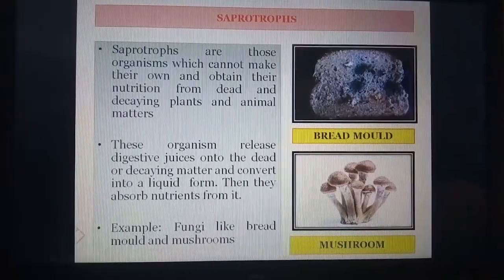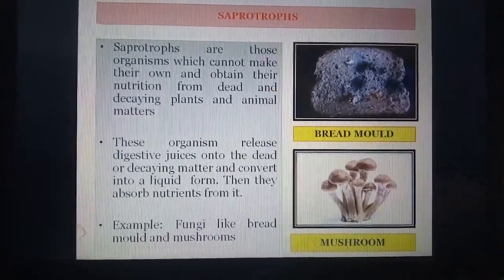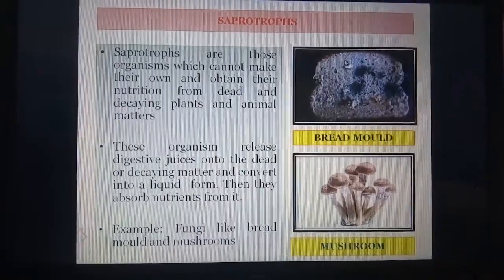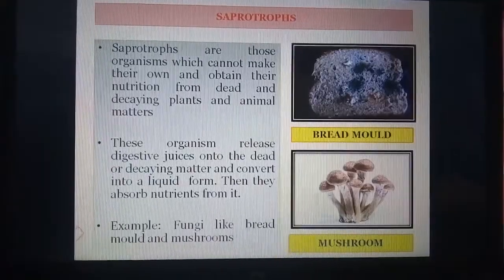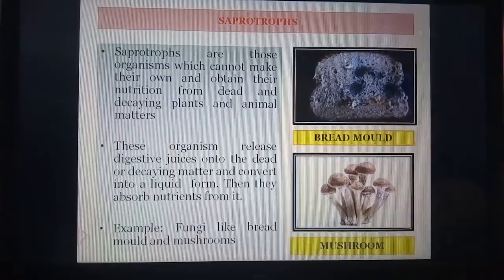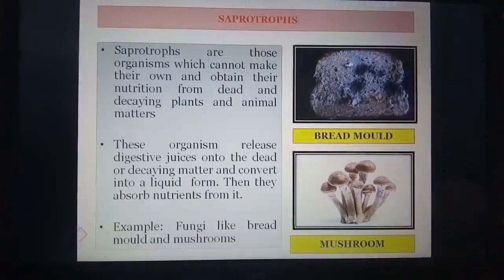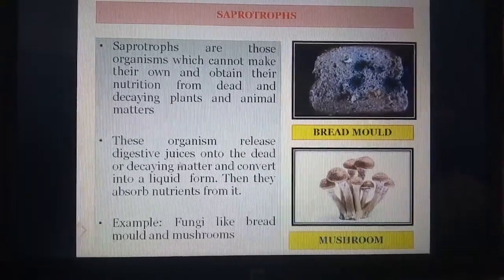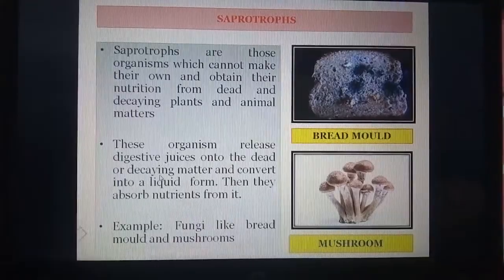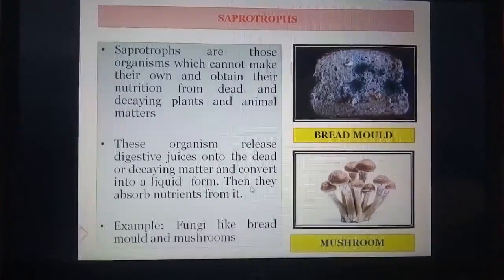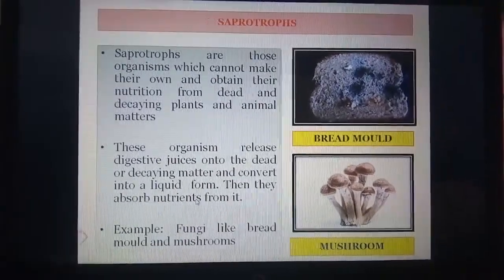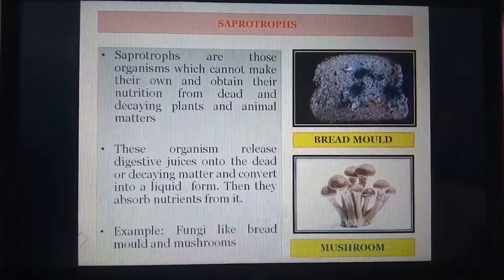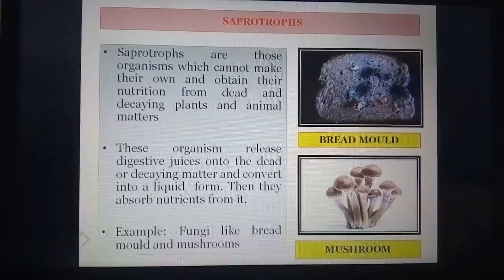Now, saprotrophs. To understand this, let us take a piece of bread and moisten it with water. Leave it in a dark and damp place for a few days. You will observe the growth of white, green, or brown thread-like structures on the surface of the bread. This growth is a fungus called bread mold. It is a saprophyte. These organisms release digestive juices onto dead or decaying matter and convert it into a liquid form, then absorb nutrients from it. This mode of nutrition, in which organisms take in nutrition in solution form from dead and decaying matter, is called saprotrophic nutrition.